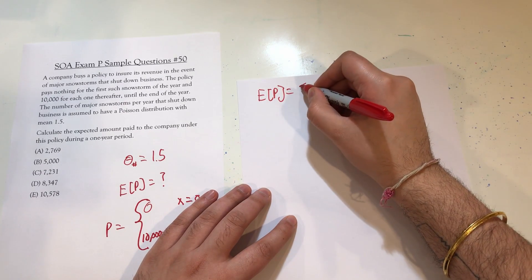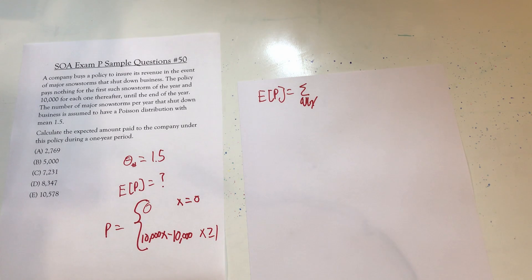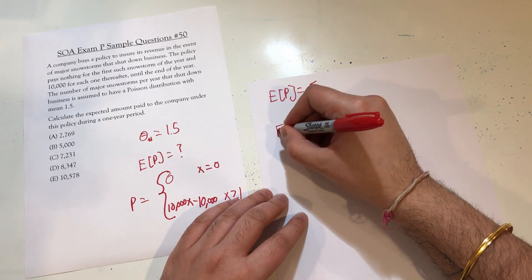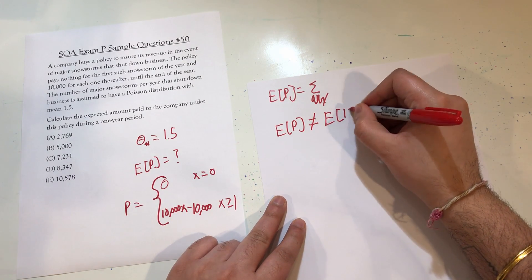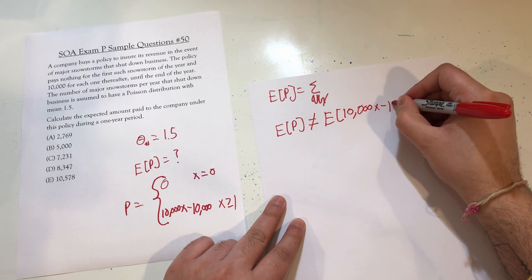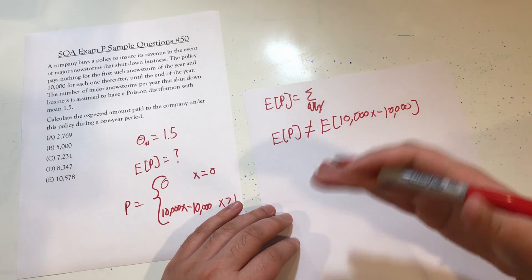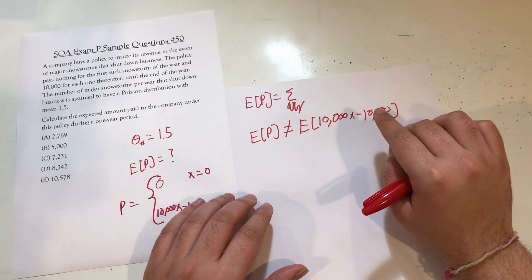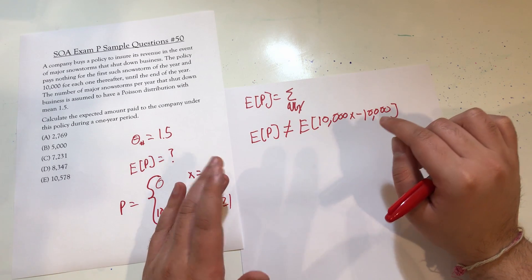Now we need to calculate the expected value of our payment. What we would do is take the sum over all of x. However, that's not necessarily going to get us the expected value of what we want, because we have P set up as this particular formula. The expected value of P is not the same as the expected value of 10,000x minus 10,000, because zero is one of the possibilities for the number of snowstorms that occur. Using this particular formula and plugging in zero would indicate that if no snowstorms occur, the business somehow owes the insurance company $10,000. So how can we go about this?